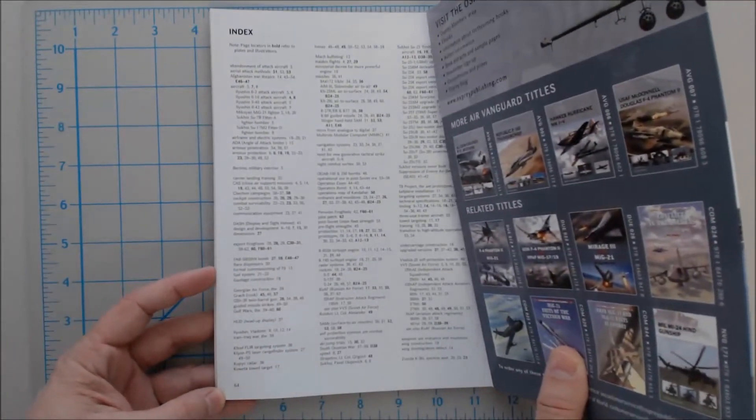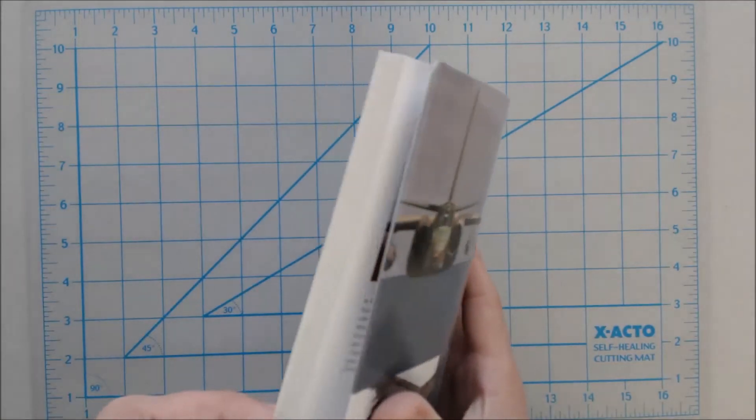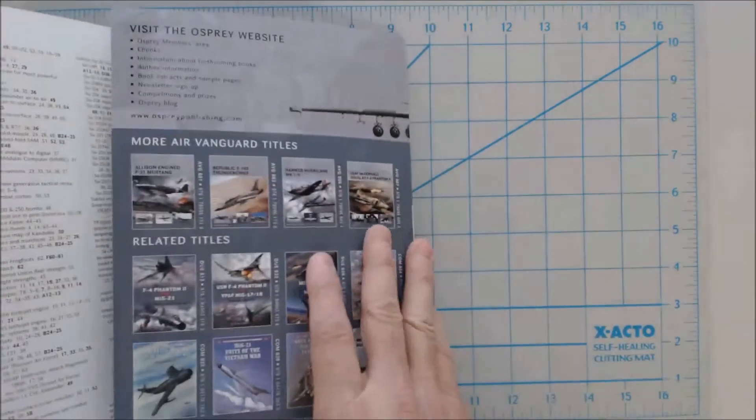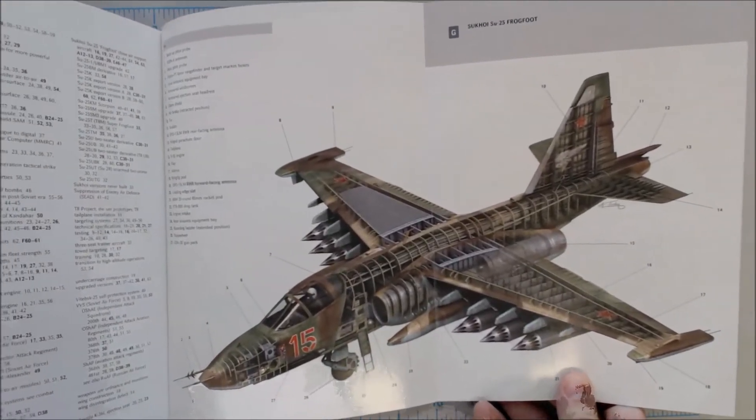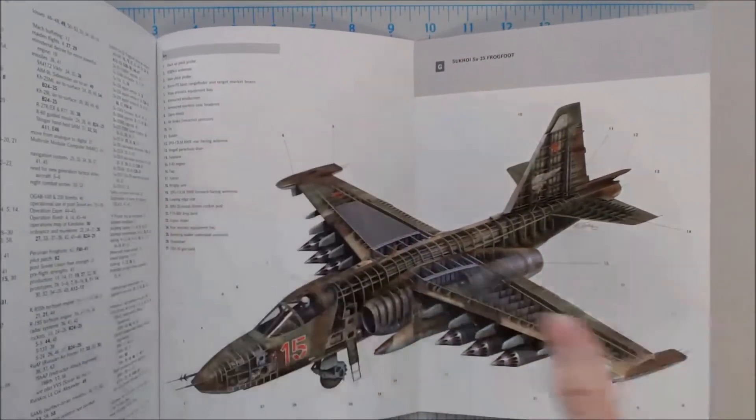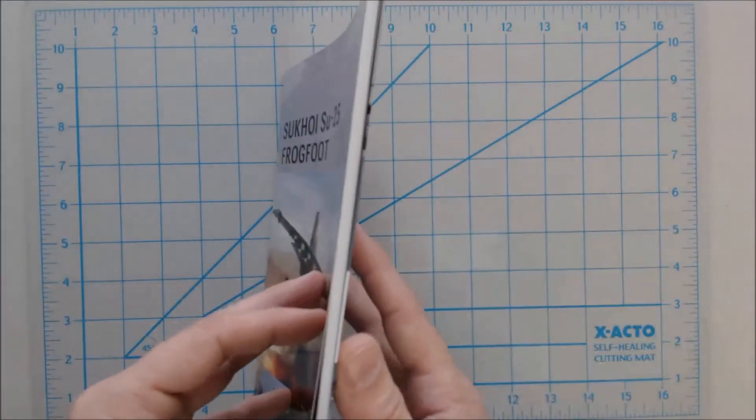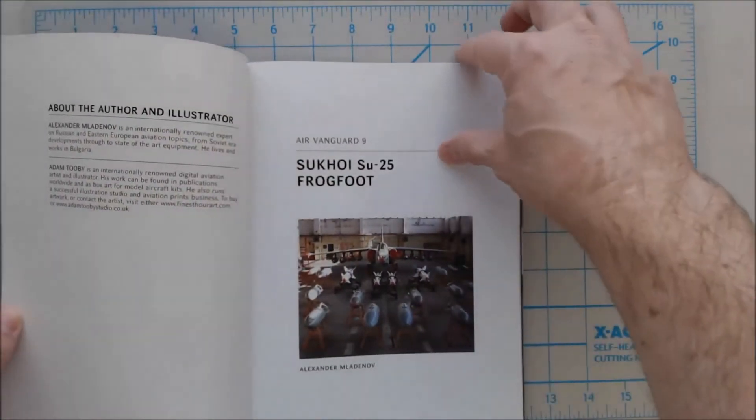The book is 64 pages, so it's a fairly condensed book. It does have a nice color pullout here, which I'll show you at the end, which includes a nice cutaway of the plane, as well as lots of information about various parts on the plane.